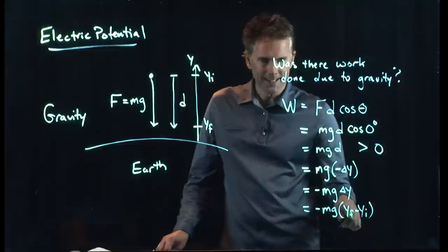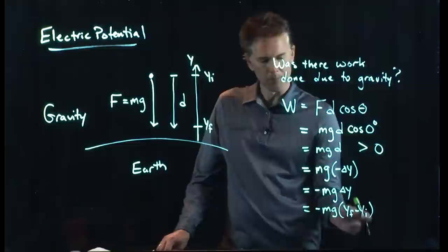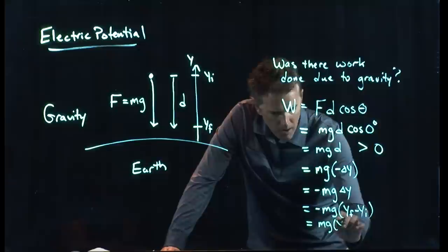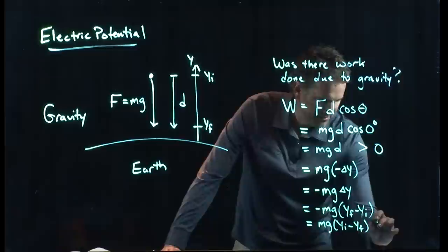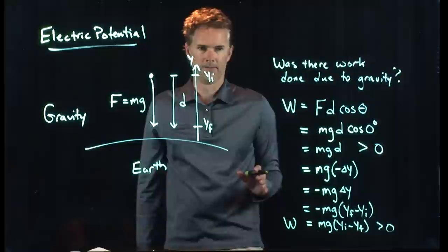That should be clear why we had to put that negative sign there — because Y final minus Y initial is going to be a negative number, since Y final is smaller than Y initial. We add another negative to make sure it's a positive number. Working that negative through gives us M·G·(Y_initial minus Y_final), which is still a positive number. This is the work due to gravity.